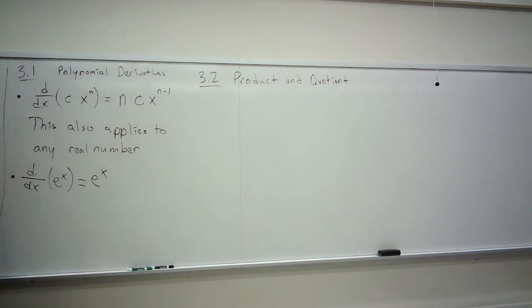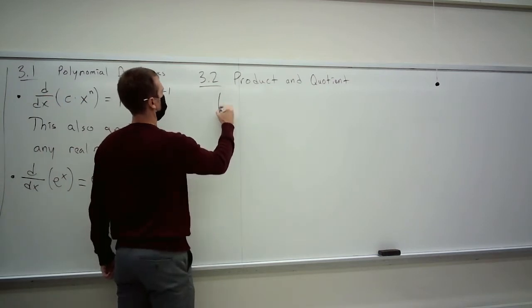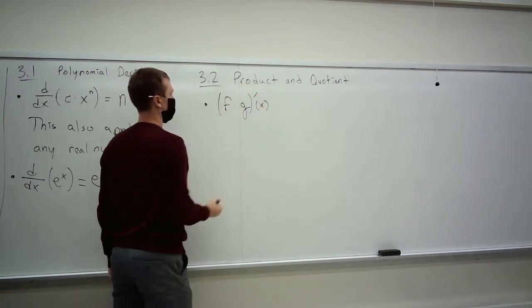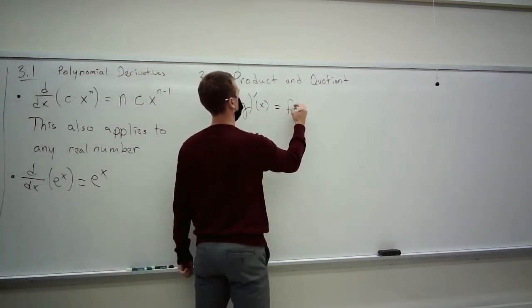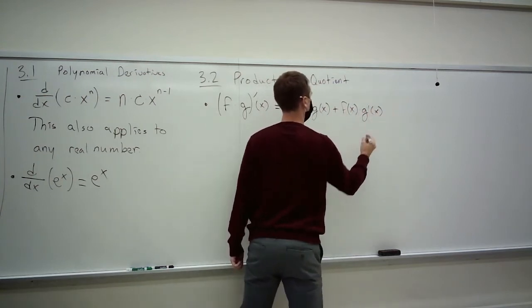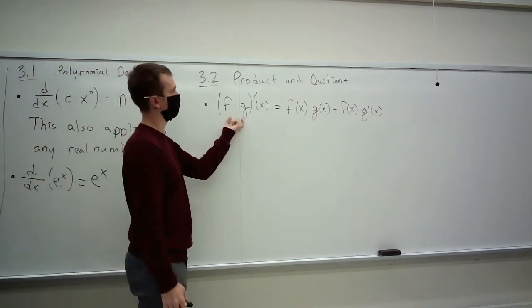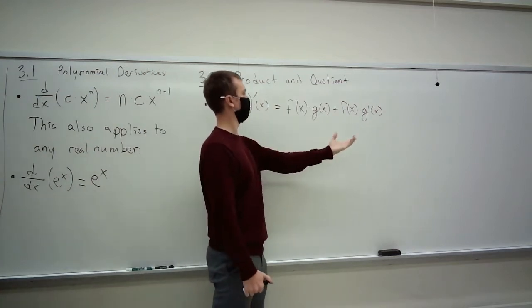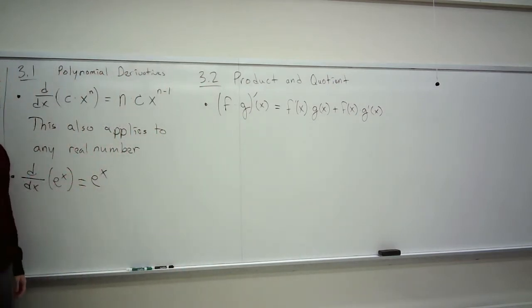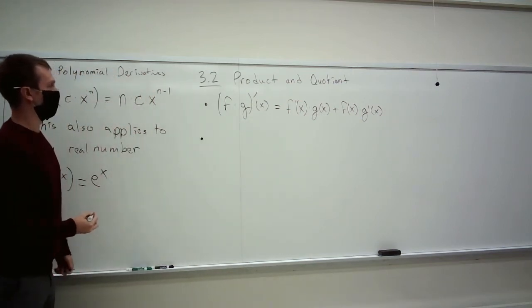In 3.2, we talked all about product and quotient rules. Section 3.1 roughly worked with how to take derivatives of sums of things. 3.2 roughly works with how to take derivatives of products of things, or quotients of things. And so the rules are these. If you have one function times another, and you want to take their derivative, then this is just the derivative of the first times the second, added to the first times the derivative of the second.